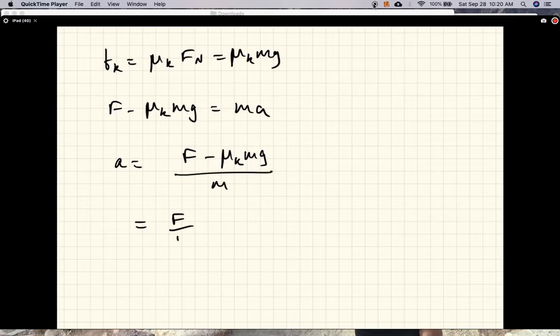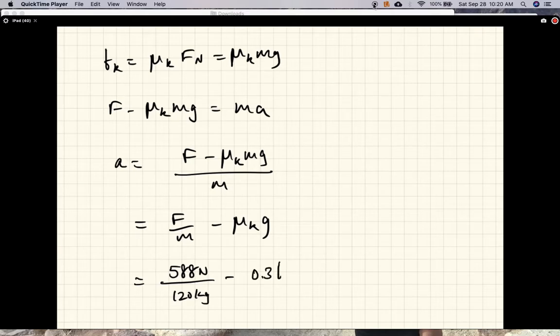Okay, we'll do F over m minus mu_k times g. F is 588 N, we have applied a 588 N force, 120 kg minus 0.3 times 9.8 meters per second squared.